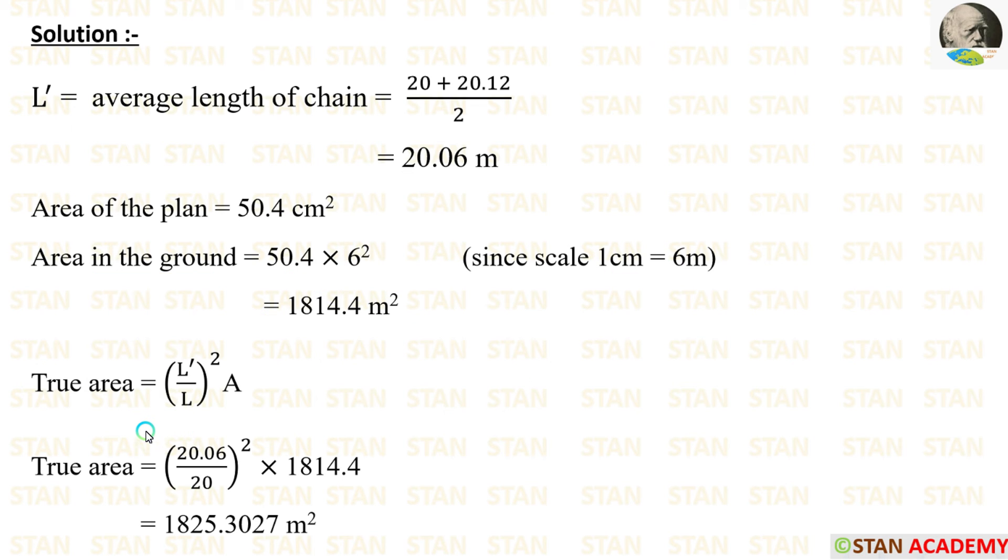Now, we can calculate the true area. The formula is L dash by L the whole square into area. We have already calculated L dash, that is 20.06 meters. The initial length of the chain is 20 meters. We can apply the area also we got. Finally, we are getting the true area is equal to 1825.3027 meter square.